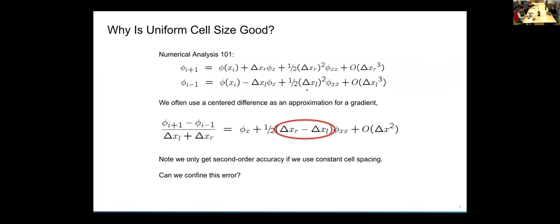And the reason for that is, if you construct like kind of a center difference approximation of the gradient, for example, and you work out what the discretization error would be, you can see there's this term that's first order, but it depends on the difference between the cell spacing to your right and to your left. So if you have a uniform cell spacing, that term cancels out and you kind of automatically get this second order accuracy. So that's kind of an advantage of using uniform cell sizes with structured meshes.